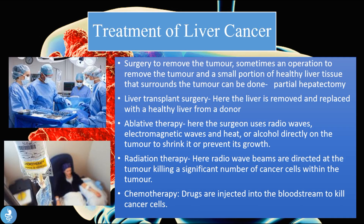For treatment of liver cancer, surgery to remove the tumor can be done. An operation to remove the tumor and a small portion of healthy liver tissue surrounding it is called a partial hepatectomy. Liver transplant surgery is another option, where the liver is removed and replaced with a healthy liver from a donor. Ablative therapy uses radio waves, electromagnetic waves, heat, or alcohol directly on the tumor to shrink it. Radiation therapy directs radio wave beams at the tumor to kill cancer cells, and chemotherapy involves drugs injected into the bloodstream to kill cancer cells.